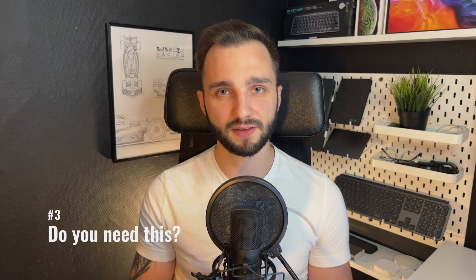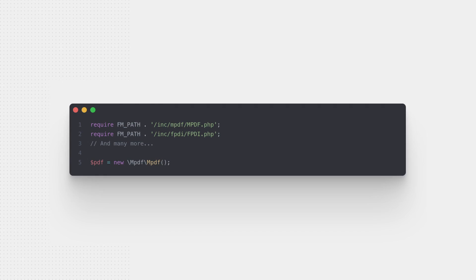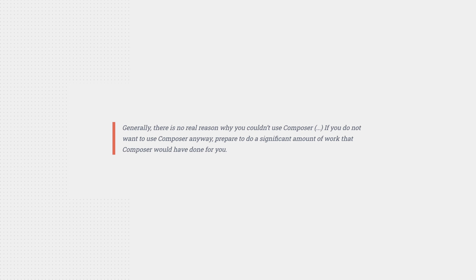Let's imagine I need to use the MPDF library in my project because I don't want to spend time creating PDF files manually from scratch. Manually, I would have to download all the dependency source code to my codebase, download all the dependency's dependencies, store them in my repository, and load the required classes and files — which ones are required? I'd need to figure it out manually. Installation and version management also need to be handled manually. It sounds like a lot of inefficient work. Even the library authors write in their official docs that they don't see a reason not to use Composer, and if you don't want to use it, be prepared for a lot of inefficient work that Composer would have done for you.